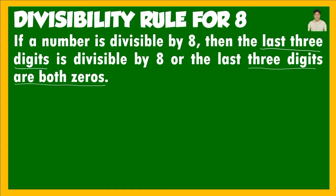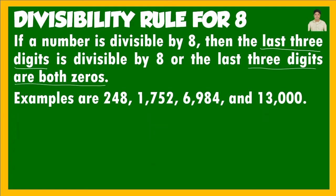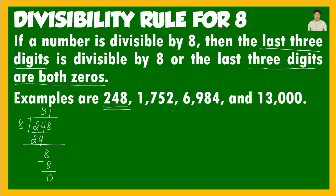Examples are 248, 1,752, 6,984, and 13,000. For 248: divide by 8 — 2 is not divisible by 8, so take 24; skip counting: 8, 16, 24 — that is 3; subtract: 24 minus 24 is 0; bring down 8; 8 divided by 8 is 1. Remainder is 0. Therefore 248 is divisible by 8.